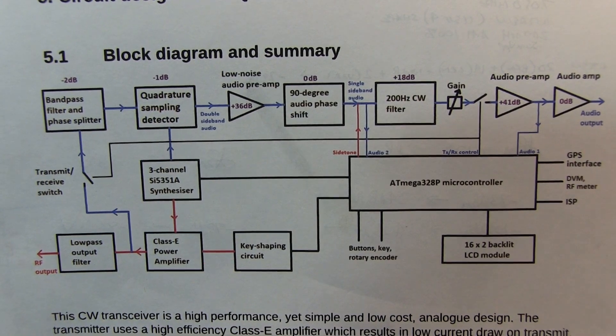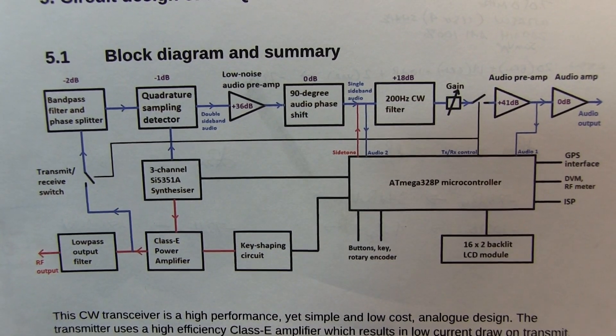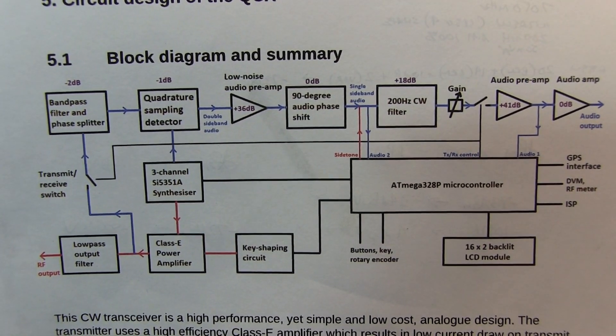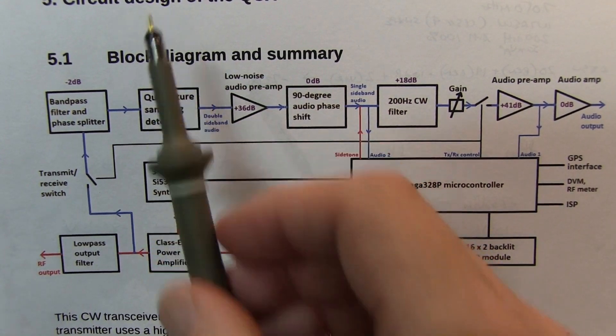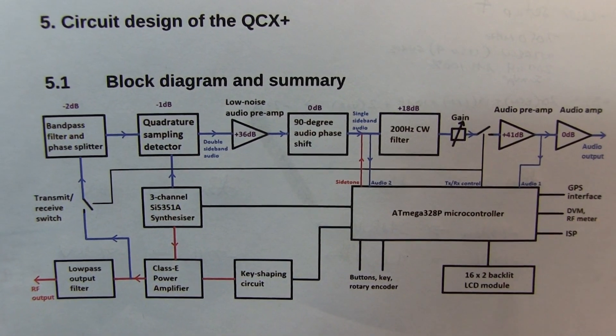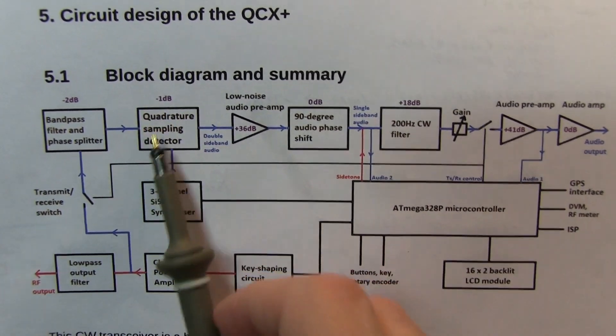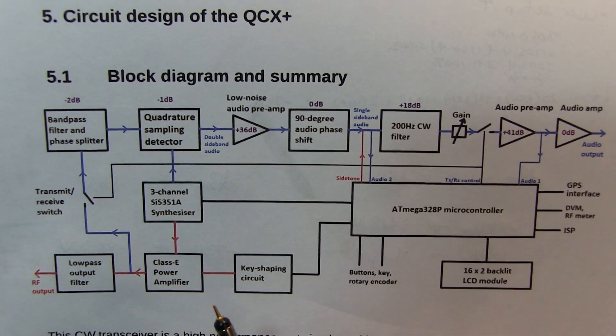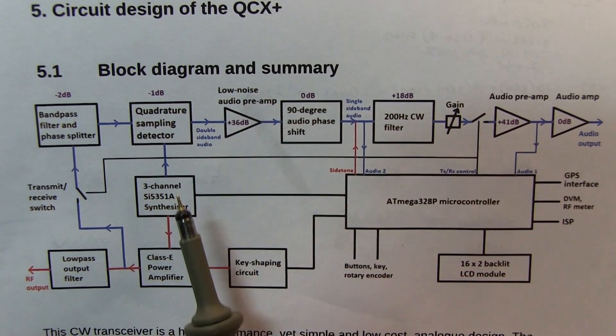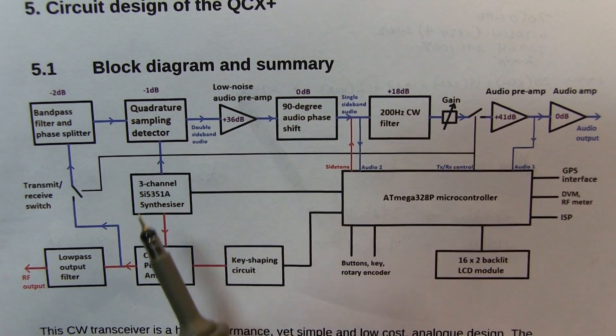Now in most receivers, the automatic gain control will adjust the gain in the IF stages of the receiver. Well, the QCX Plus is a direct conversion receiver, so there are no IFs. Essentially our RF comes in, goes through our quadrature sampling detector, our TALO detector, which essentially outputs I and Q values, double sideband I and Q values.